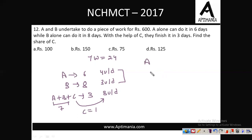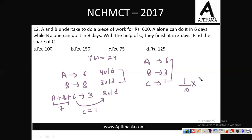A's efficiency is 4 units/day, B's is 3 units/day, C's is 1 unit/day. Total ratio is 4:3:1 = 8 parts total. C's share is 1/8 of 600 = 75 rupees. The correct answer is 75.